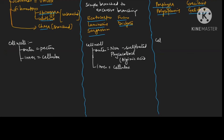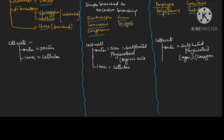In red algae cell wall, the outer layer is sulphated phycocolloid — please note the difference from brown algae, which is non-sulphated. This sulphated phycocolloid is agar, or it can also be carrageenan. The inner layer is cellulose. So the cell wall comparison is clear.